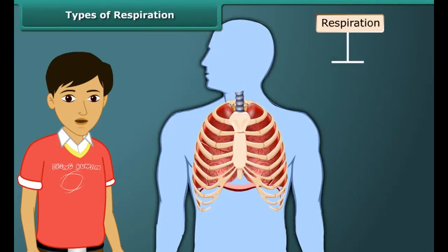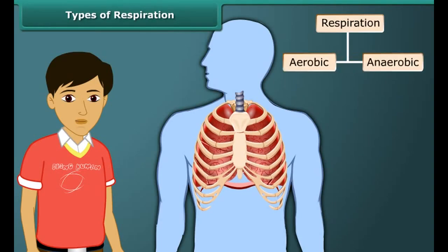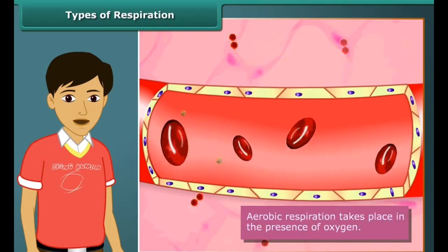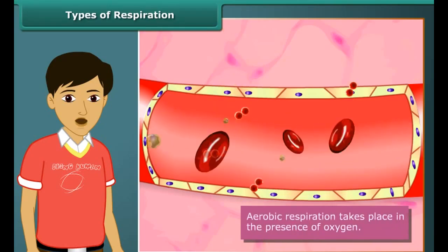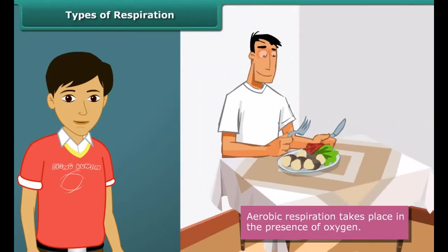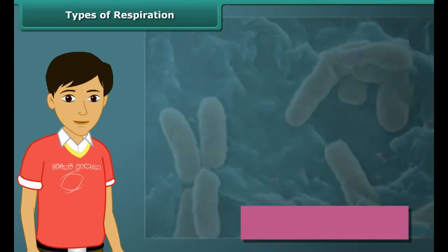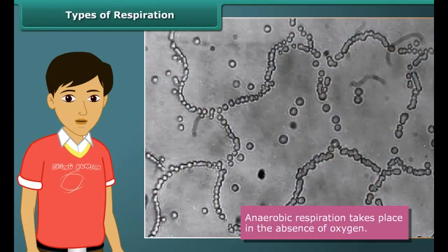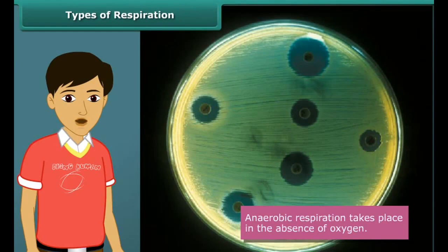Respiration is of two types: aerobic and anaerobic. Aerobic respiration is the respiration that takes place in the presence of oxygen, where food is broken down into glucose in the presence of oxygen. Anaerobic respiration takes place in the absence of oxygen and is found in some microorganisms such as bacteria that inhabit places where oxygen is missing. The energy produced in aerobic respiration is more than the energy produced in anaerobic respiration.